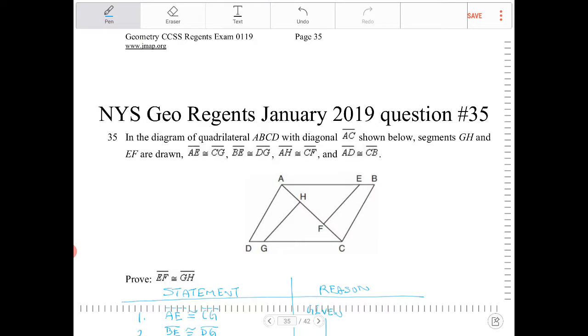Okay, so let's mark up the diagram. AE is congruent to CG. BE is congruent to DG. AH is congruent to CF. And AD is congruent to CB.